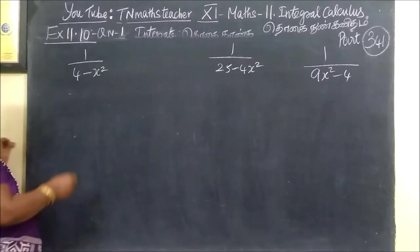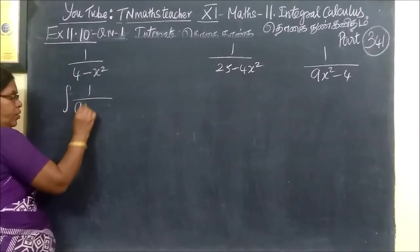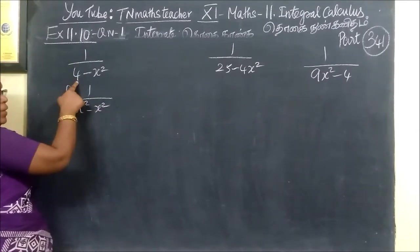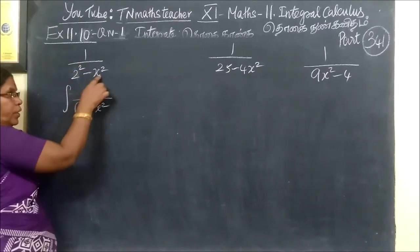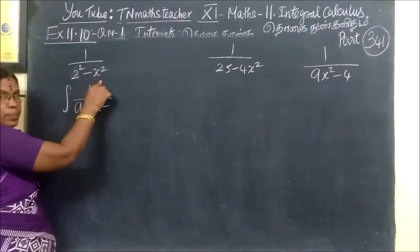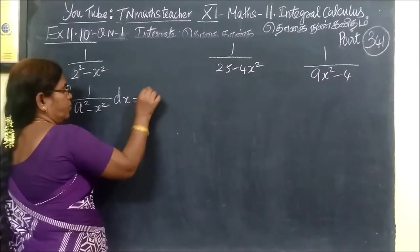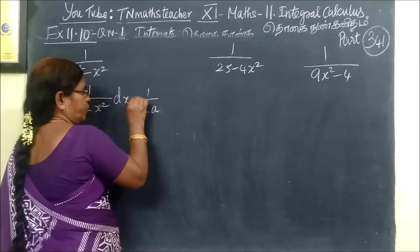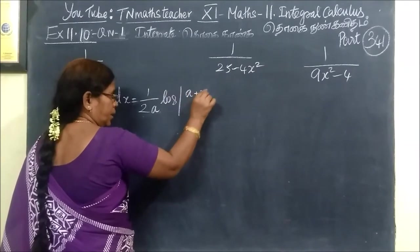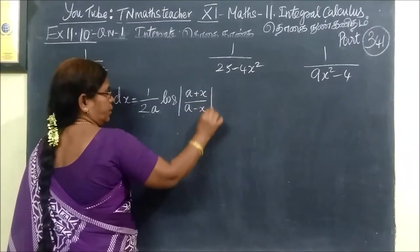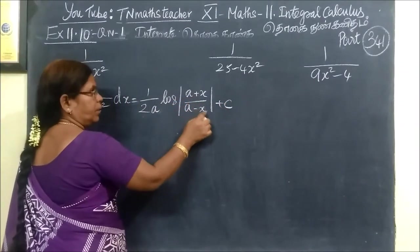We are integrating the given one. We are using the formula integral of 1 by a squared minus x squared. We are using a squared equal to 4, so a equals 2. The variable is x. The formula is 1 by 2a into log of modulus of a plus x by a minus x. This is the formula.